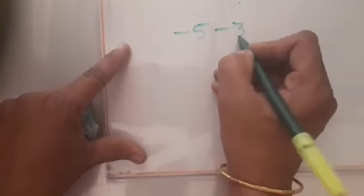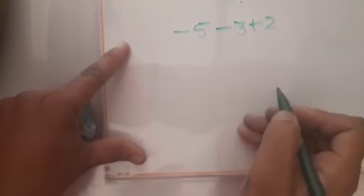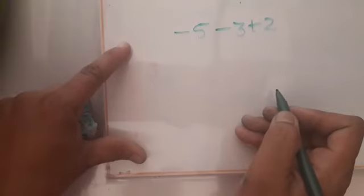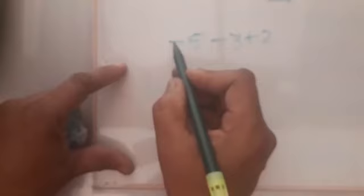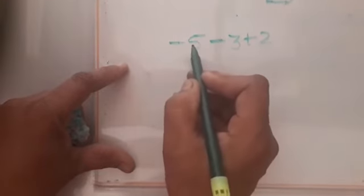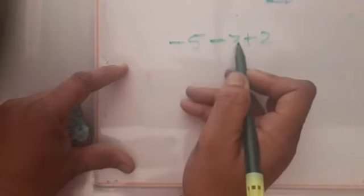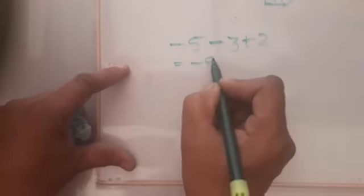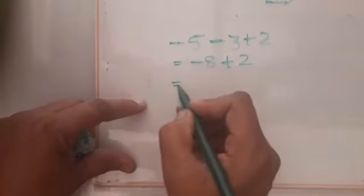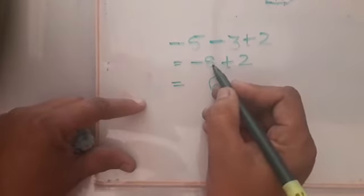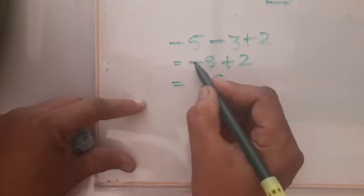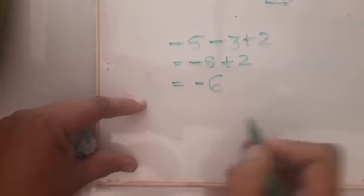Now for a slightly higher question: minus 5 minus 3 plus 2. Find out which numbers have the same sign. Always read the number along with the sign. Minus 5 and minus 3 have the same sign, so add them: minus 5 plus minus 3 gives minus 8. Now minus 8 and plus 2 have opposite signs, so subtract: 8 minus 2 is 6. Since 8 is the greater number and has a minus sign, the answer is minus 6.